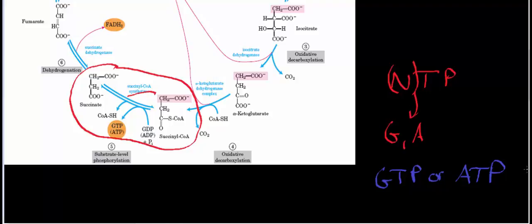This enzyme can react with either GDP or ADP. So the point is we're going to get a nucleoside triphosphate where the nitrogenous base is going to be a purine. Because you're ligating a GDP or an ADP with a phosphate, this is an example of phosphorylation. Specifically, it's a type of phosphorylation called substrate-level phosphorylation, which is very common.